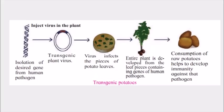Work on production of edible vaccines is in progress but has not yet been introduced to the market. Presently, potatoes are being produced with the help of biotechnology. These are called transgenic potatoes and will act against bacteria like Escherichia coli and Vibrio cholerae, which cause dysentery or stomach infections. Consuming these raw potatoes will generate immunity against cholera and related diseases.